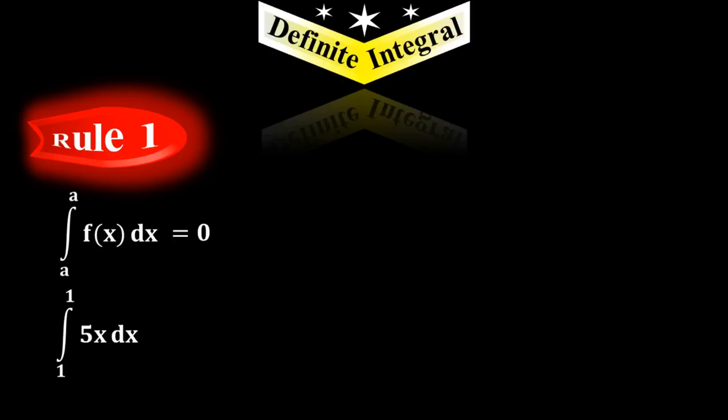In an example, we have integral from 1 to 1 of 5x dx. In this function, our limits are equal. The lower limit is 1 and the upper limit is 1.